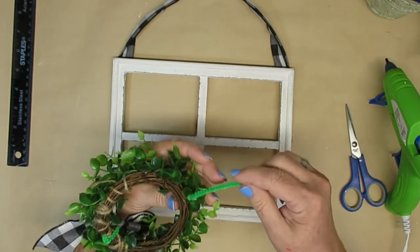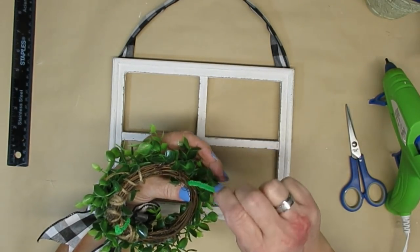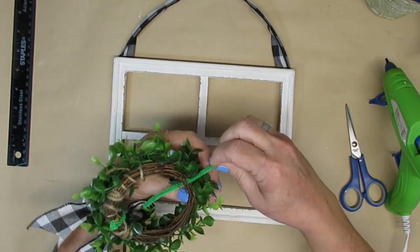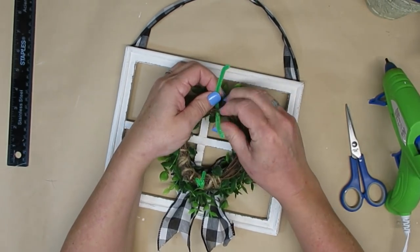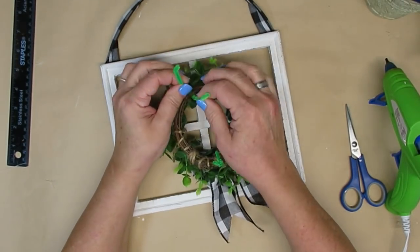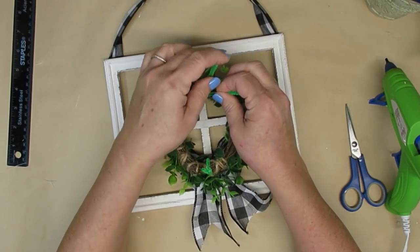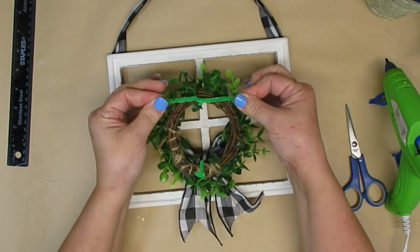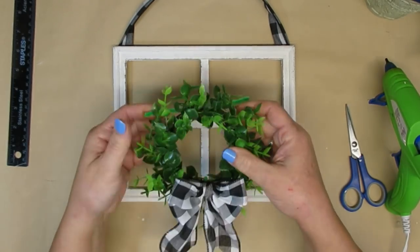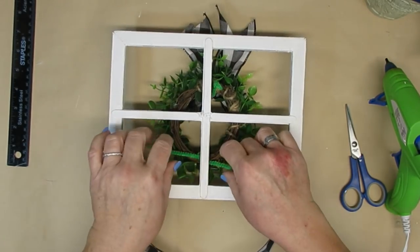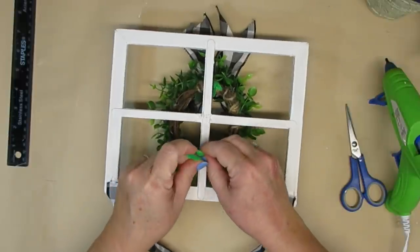I'm going to use another chenille stem to hang the wreath on the window I'm just going to feed it through a couple of the little branches as you see me doing here I'm going to twist it once and then I'm going to change the direction so I can easily put it onto the window frame. Again, this will give me the ability to change the wreath out for the seasons if I choose to.